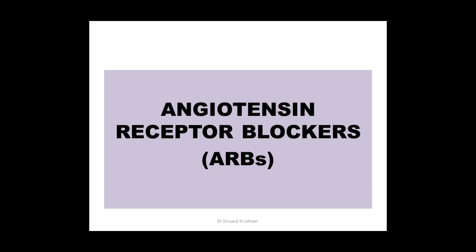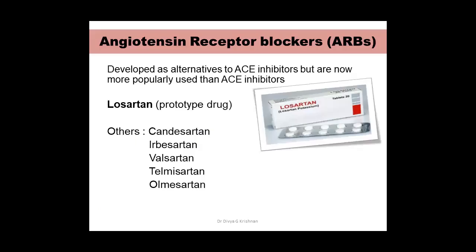Now we shift to angiotensin receptor blockers, abbreviated as ARBs. If you have understood ACE inhibitors, ARBs will be easy because uses and ADR are more or less similar. Examples: losartan (the prototype, the first drug developed), valsartan, candesartan, irbesartan, telmisartan, and olmesartan. These drugs were developed as an alternative to ACE inhibitors and have now become more popular.